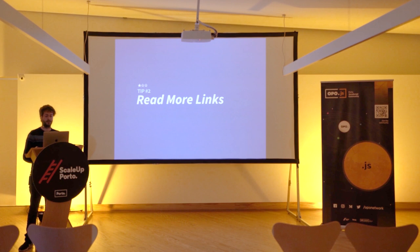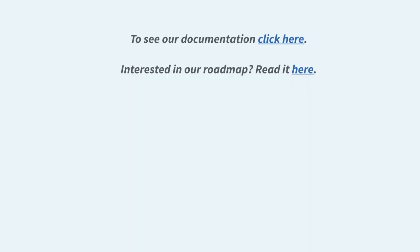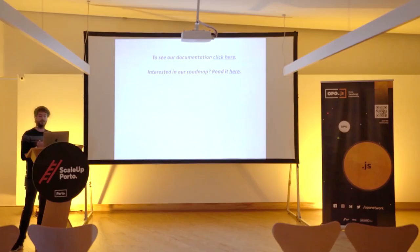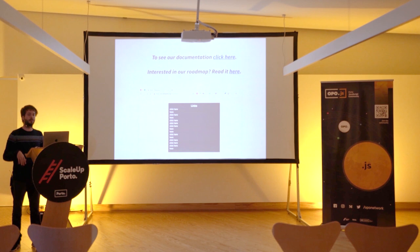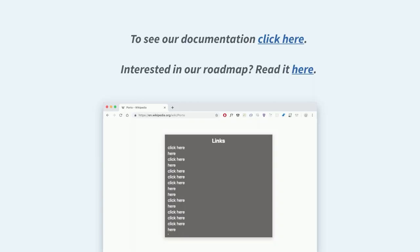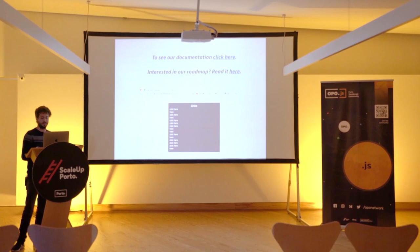Tip number two: meaningful link text. Imagine seeing links that say 'click here' or 'read it here.' As sighted users we understand from context, but screen reader users can navigate by links alone. If all the links just say 'click here,' that's not meaningful. The easiest fix is to change the copy — wrap the link text around a meaningful phrase like 'documentation' so it's clear where the link goes.